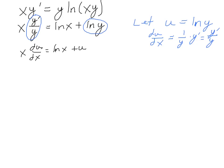I'll put all the u terms to one side so we can see this as a standard linear form. Dividing everything through by x, I get du/dx minus 1 over x times u is equal to the natural log of x over x.